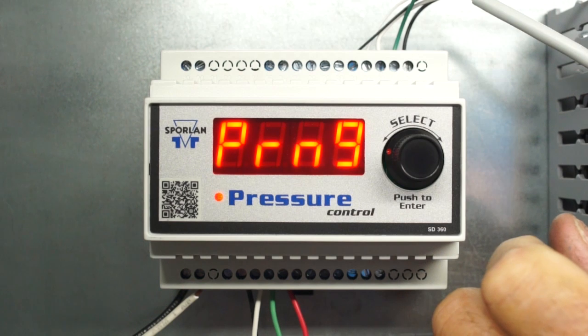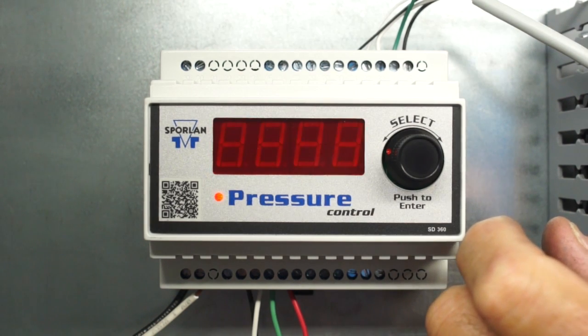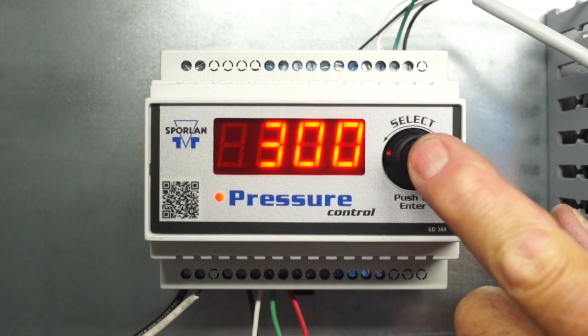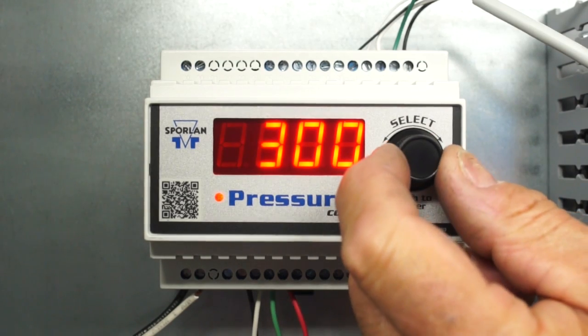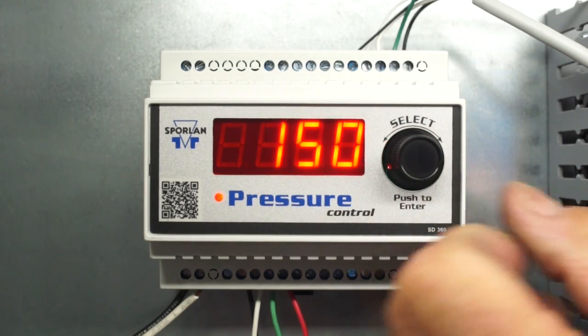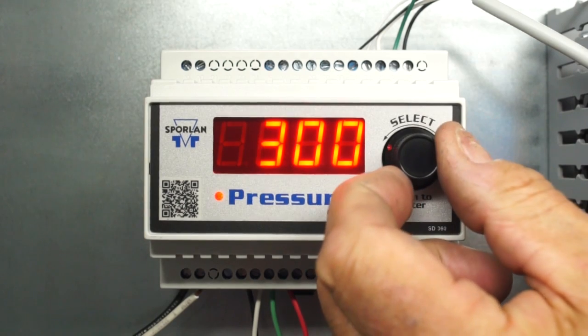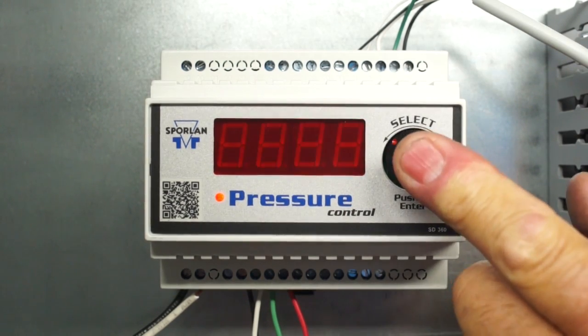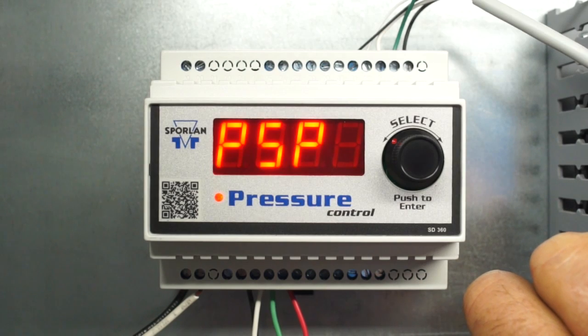The next variable, pressure transducer range PRNG is displayed. Set the pressure transducer range PRNG by turning the select knob to dial in the correct pressure range for the transducer being used. Press the select knob to save the value.